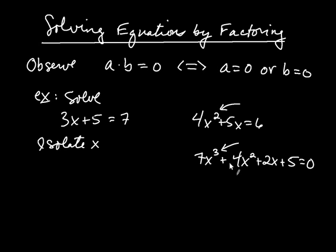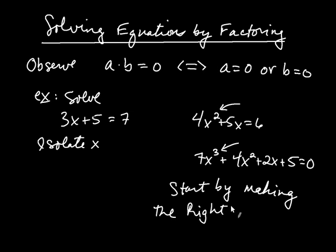So when you have these types of equations, we're no longer going to be using the strategy of isolating X. What we're going to be doing instead is starting off by making the right-hand side equal to zero. And then once we do that, we'll factor the left-hand side. So that's going to be our strategy. We're going to get zero on the right-hand side and then we're going to factor the left-hand side so that we can draw these conclusions.